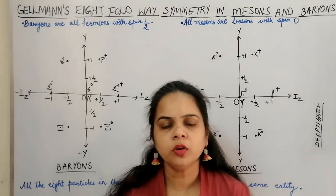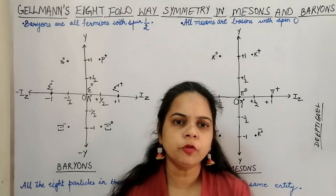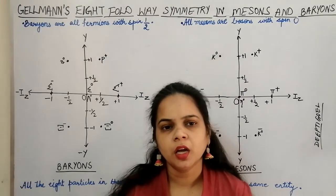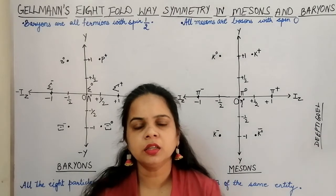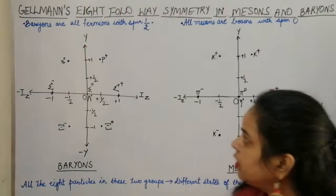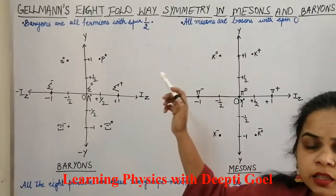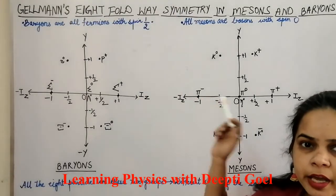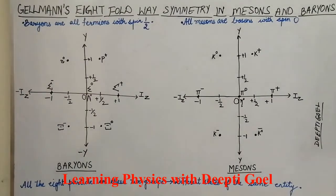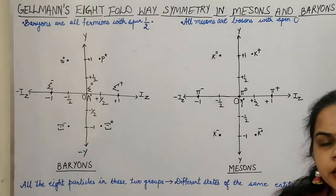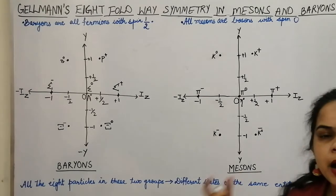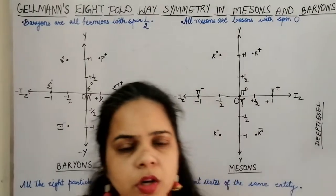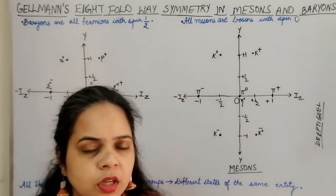Hello students. Now we are going to discuss the 8-fold symmetry of the mesons and the baryons. Gell-Mann in 1961 had proposed the 8-way symmetry in mesons and baryons. He had predicted that all 8 particles in the mesons as well as in the baryons represent the same kind — they are different states of the same entity, meaning the states are different but the particles are the same.